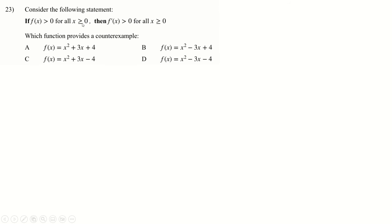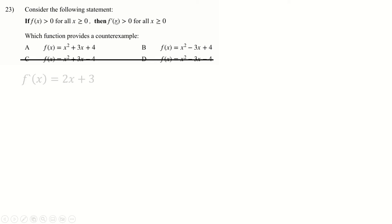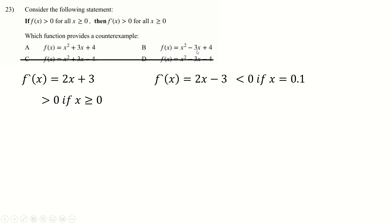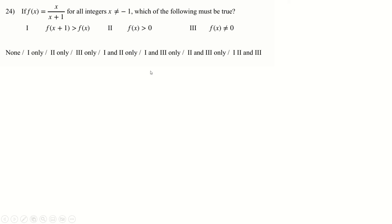Question 23: f'(x) > 0 for all positive x — find the counter-example. The two quadratics have negative y-intercepts, so they dip below the x-axis near x = 0, eliminating them. Of the remaining two, differentiating gives one that is always positive for x > 0 and one that is not. The one whose derivative is not always positive for x > 0 must be the counter-example, so the answer is C.